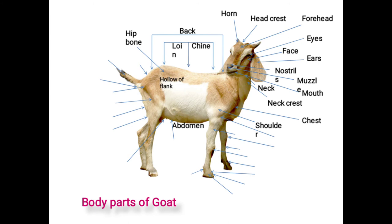The fourth region is limbs or quarters, which includes forequarters and hindquarters. The forequarter region is important in selecting the animal for draft purpose. It includes arm and shoulder, shoulder blade, arms, forearm, knee joint, shank, pastern, fetlock, coronet, hoof, and dewclaws.